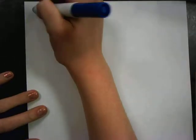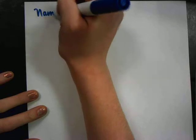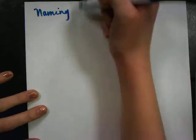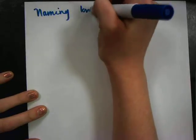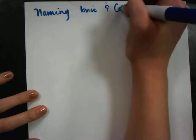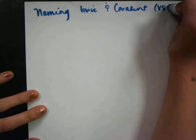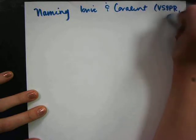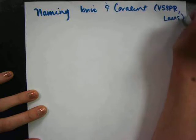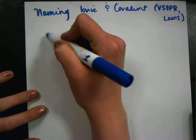Okay, let's talk about naming ionic compounds, ionic and covalent, and then doing the Lewis dot, VSEPR, all of that. So for this, I'm going to pick an ionic compound and a covalent.